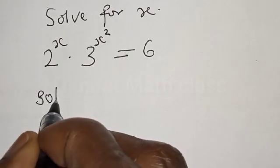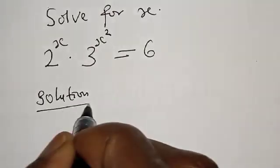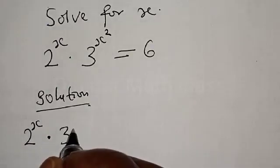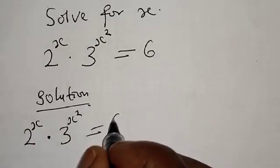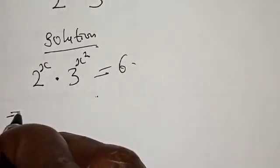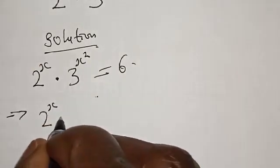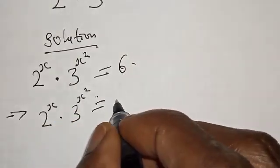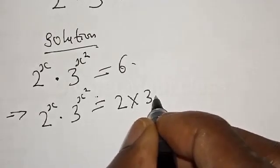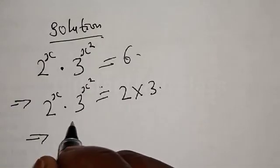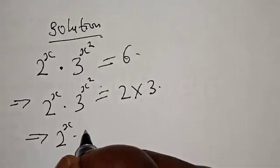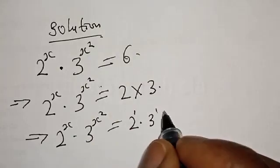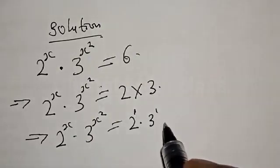Solution: we have 2 raised to power x multiplied by 3 raised to power x squared equal to 6. This implies that 2 raised to power x multiplied by 3 raised to power x squared equals 6, which can be expressed as 2 multiplied by 3. So we have 2 raised to power x multiplied by 3 raised to power x squared equal to 2 raised to power 1 multiplied by 3 raised to power 1.